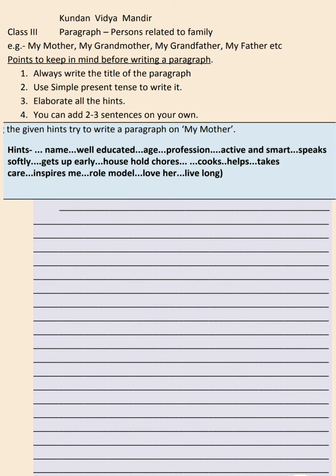The hints in exams will not get changed — similar hints will come, so no need to worry. Look at the sheet carefully. The first hint is name — obviously you have to write the name of your mother. Then well-educated — how much has she studied. Then age — how old your mother is. Then profession — that means what your mother does, what is her job: is she a teacher, a doctor, or a homemaker?